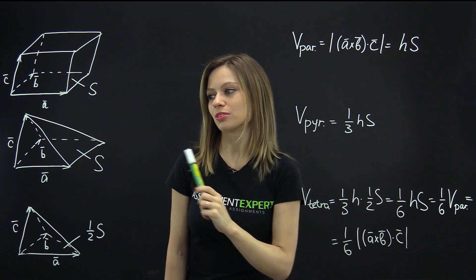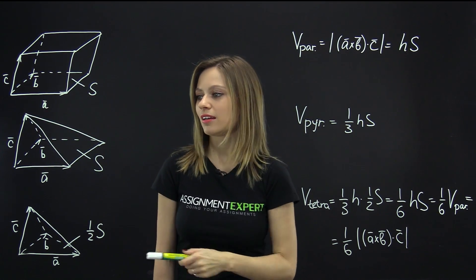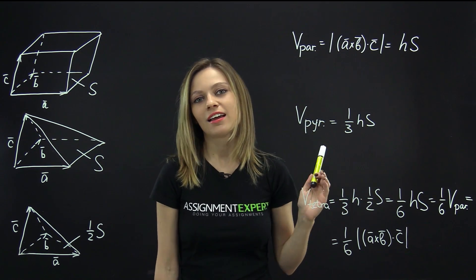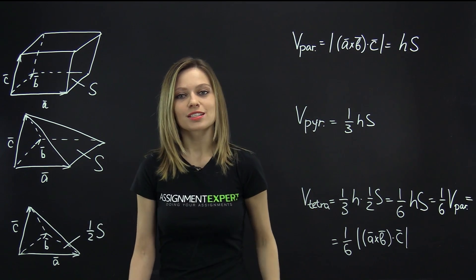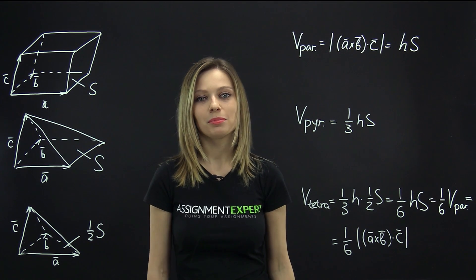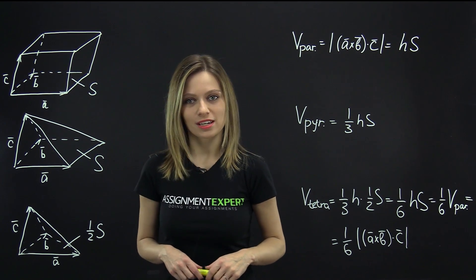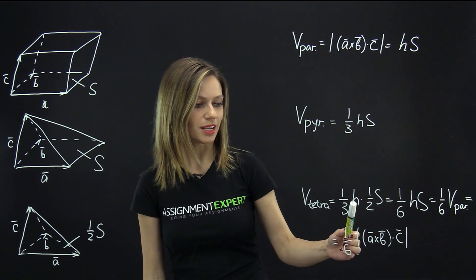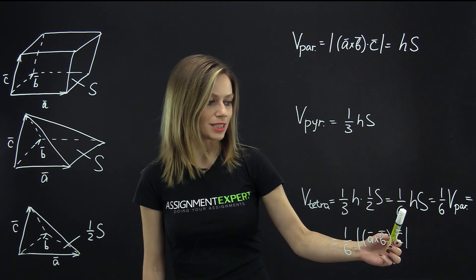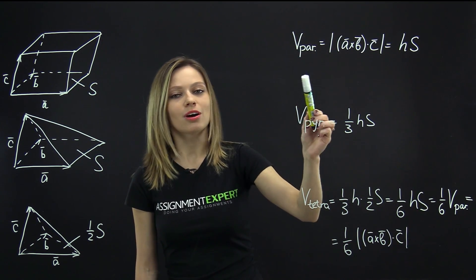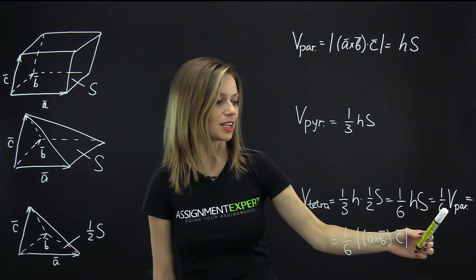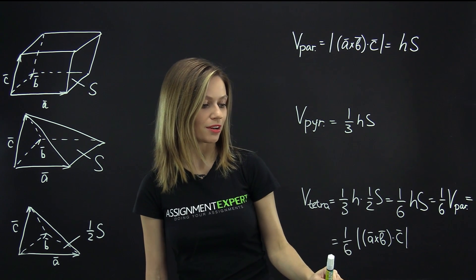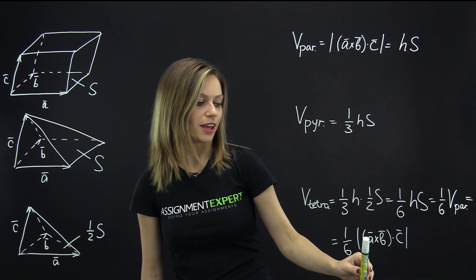If we consider a pyramid built on the same three vectors, with the same base and the same height, we know that its volume is calculated as one-third times H times S. A tetrahedron built on the same three vectors is also a pyramid, only with a triangular base, meaning that the area of its base is twice as small as the area of the corresponding parallelogram. So its volume is calculated as one-third times H times one-half of S, giving us one-sixth times HS. Since HS equals the volume of the parallelepiped, we have one-sixth times the absolute value of A cross B dot C.